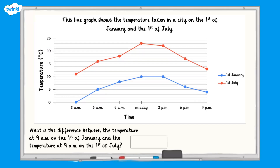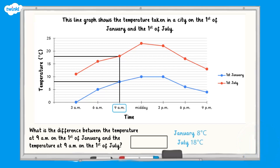Sometimes we might need to answer comparison questions about a line graph. For example, what was the difference between the temperature at 9am on the 1st of January and the temperature at 9am on the 1st of July? First of all, we can use the strategy we used before to work out each of the values. Pause here and have a go. To find the difference we need to subtract 8 from 18, giving us the answer of 10 degrees.